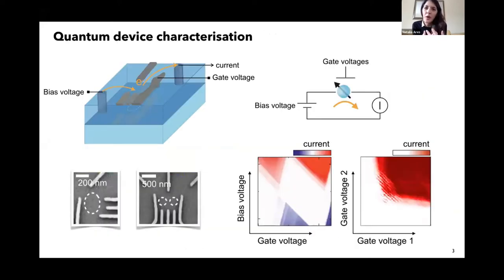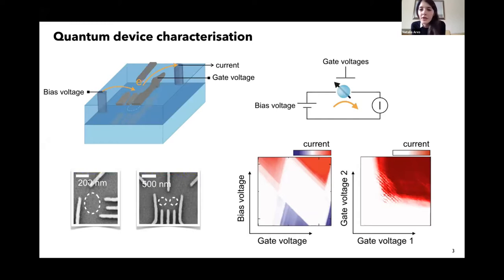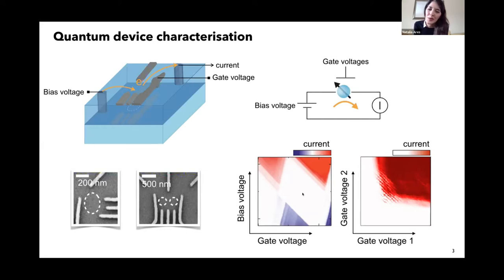I'm going to focus on laterally defined quantum dots. These devices encode qubits in a single or two electrons, and these electrons are controlled by bias and gate voltages. We can measure current that flows through this device. Here you can see micrographs of these devices showing a single or a double quantum dot, and this can get very complex structures. And here you can see measurements of current in these devices as a function of bias and gate voltages. One of the problems we have addressed is that these measurements take time and are necessary to characterize the system. So how can we speed them up?